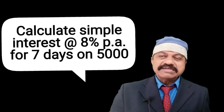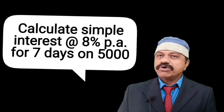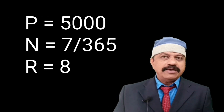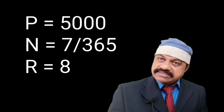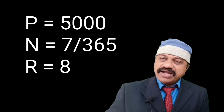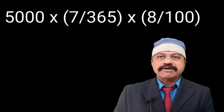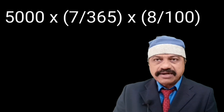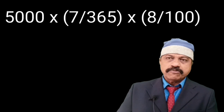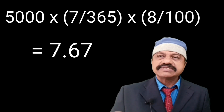Example 4: calculate simple interest at the rate of 8% per annum for 7 days on 5,000. Here P is equal to 5,000, N is equal to 7 days, that is 7 divided by 365, and R is equal to 8. PNR divided by 100 is equal to 5,000 into 7 divided by 365 into 8 divided by 100. The answer is 7.67.